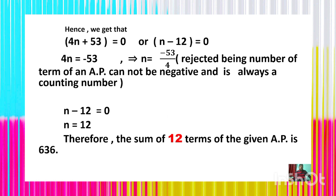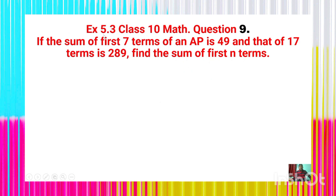This is one of the important, vital, and fundamental problems which mostly comes in your CBSE board exam. I hope you will follow the class. Here is another important problem: question number 9, exercise 5.3 of class 10 mathematics. If the sum of the first 7 terms of an AP is 49 and that of 17 terms is 289, find the sum of first n terms. Here is the solution.